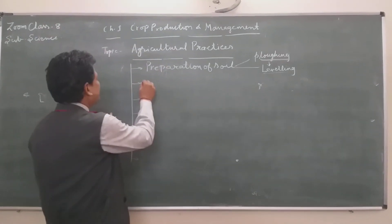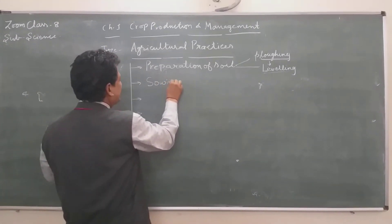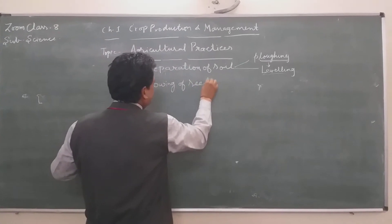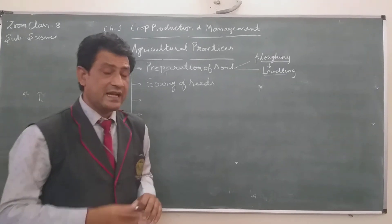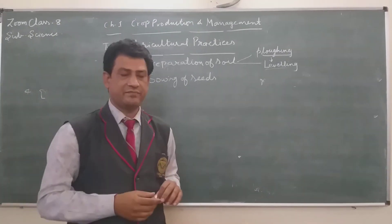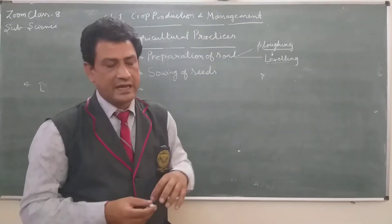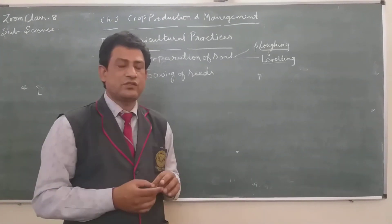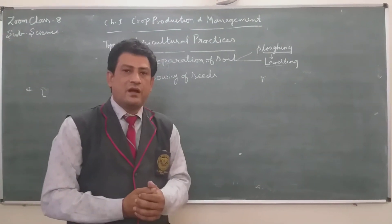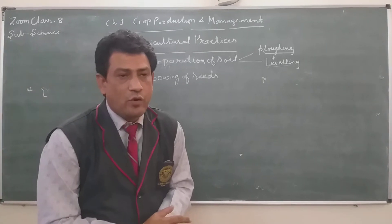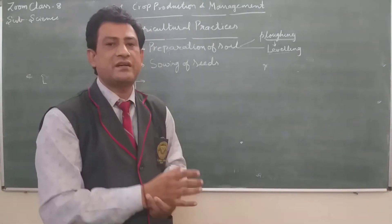After preparation of soil, the next step required is sowing of seeds. Before sowing the seeds, we should be aware of whether the seeds are healthy or unhealthy — we must check the quality of seeds put into the soil. Healthy seeds are those that have about 14% water availability.